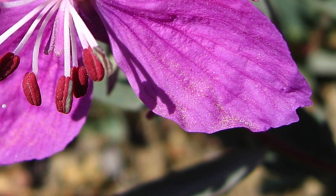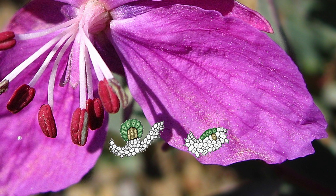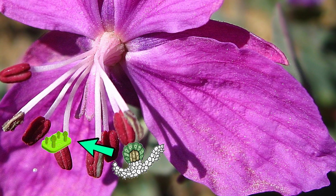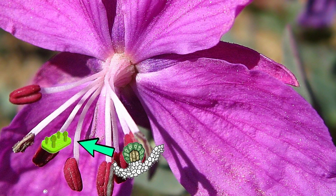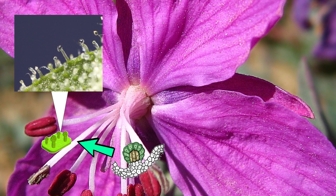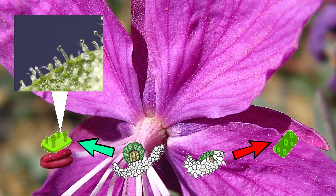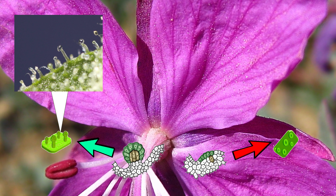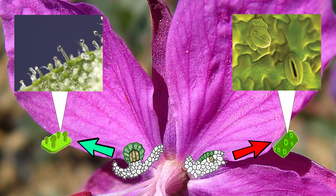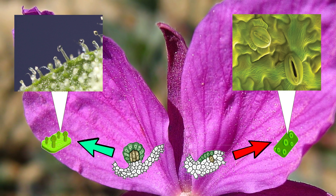Nectar is secreted from epidermal cells of the nectaries via either trichomes, which are epidermal outgrowths of various anatomy and size best known as plant hairs, or modified stomata, which are in their classic form microscopic pores found on the epidermis of plants through which the plant breathes.